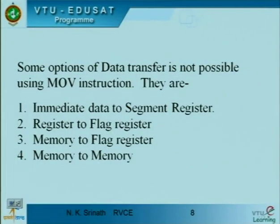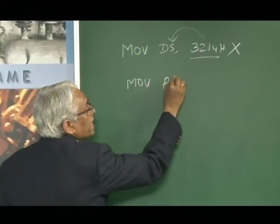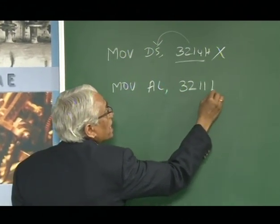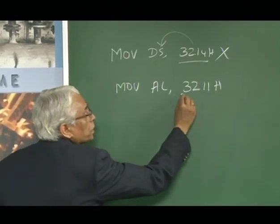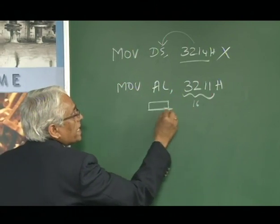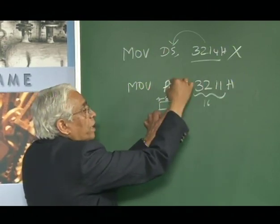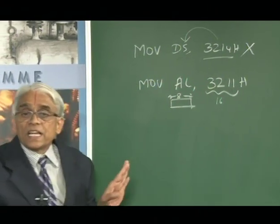Another important note when writing a program: the size of the destination must match the source. For example, MOV AL, 3211h — 3211h is a 16-bit value but AL is only 8 bits. Once we have an 8-bit register, 16-bit data cannot be moved, and hence there is an error — it is not possible.